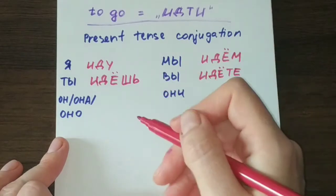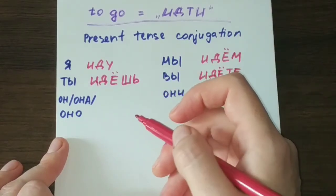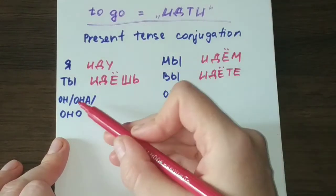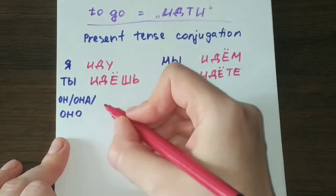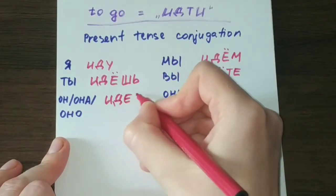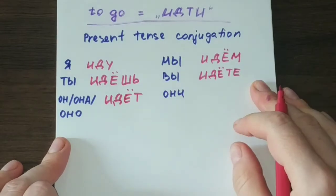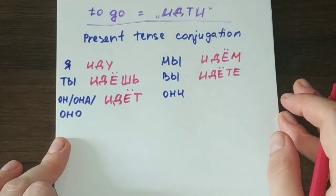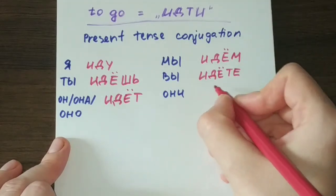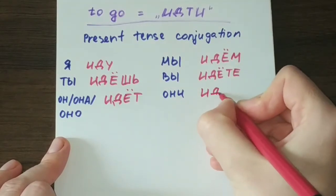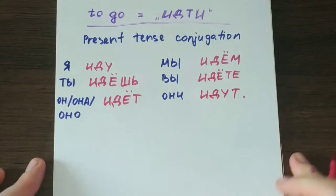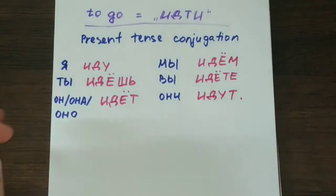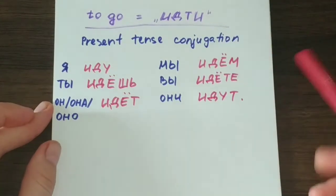The third person conjugation in the singular will be он/она/оно идёт. And the third person conjugation in the plural will be они идут. So that is the way the verb идти is conjugated in the present tense.